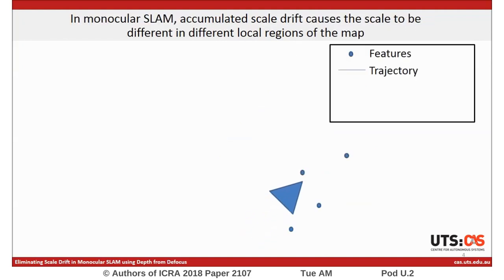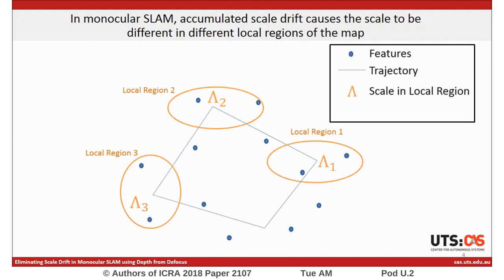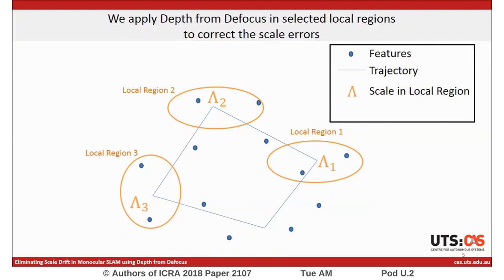For example, this animation shows the feature locations and the camera trajectory generated by monocular SLAM. The accumulated scale drift causes the scale to be different in different local regions of the map. In this research, we post-processed the output of monocular SLAM and applied depth from defocus in selected local regions to correct the scale errors.